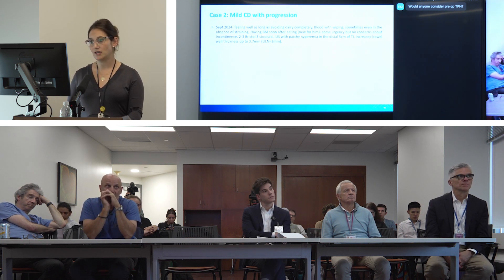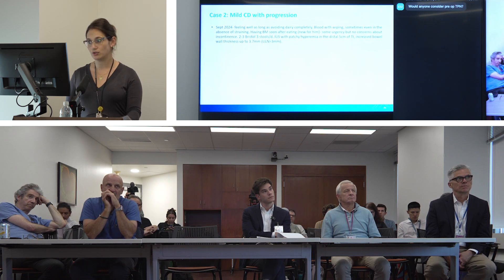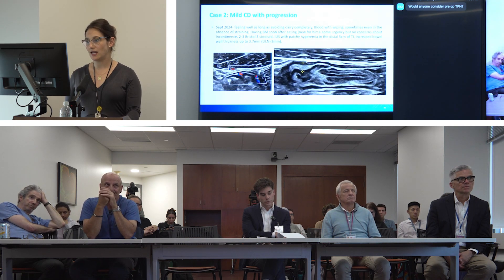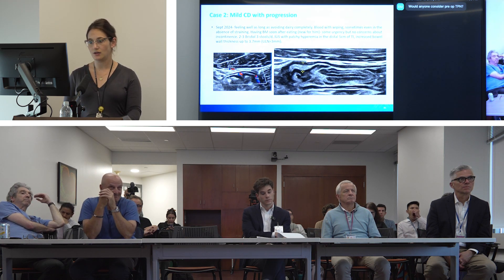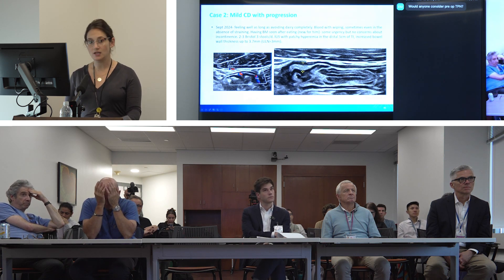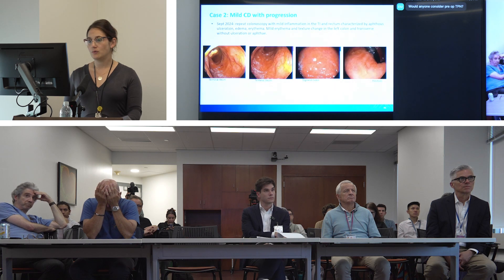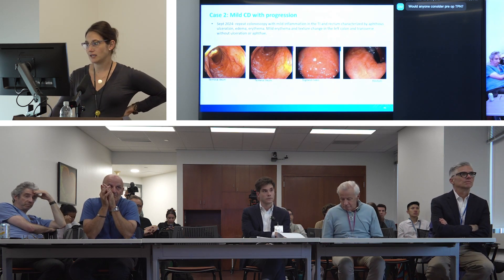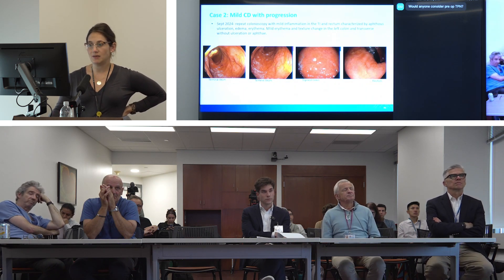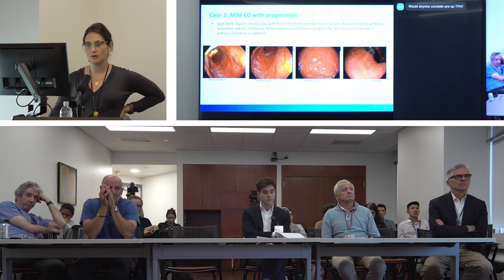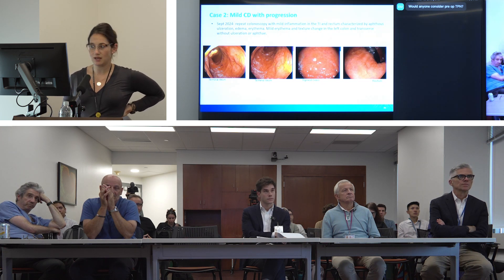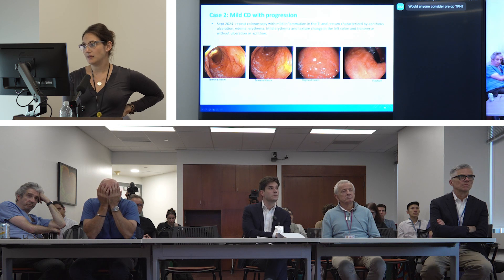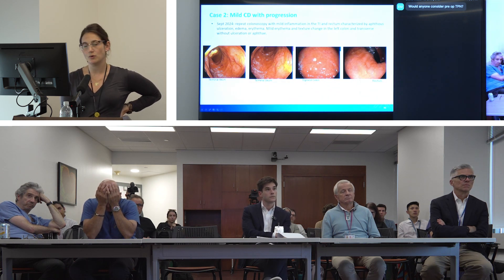In September, he develops blood with wiping sometimes even without straining, and has a bowel movement soon after eating — new for him — with some urgency but no concerns about incontinence. Stools are formed, two to three per day. An intestinal ultrasound shows patchy hyperemia in the distal five centimeters of terminal ileum with a little wall thickening in this area. You can see on the left the hyperemia as well as this increase in bowel wall thickness. The plan was to repeat a colonoscopy, which now shows mild inflammation in the TI and rectum characterized by aphthous ulcerations, edema, and erythema, and mild erythema and texture change without ulceration in the left colon and transverse — a progression compared to prior, still overall mild. There were definitely several focal aphthous ulcers.